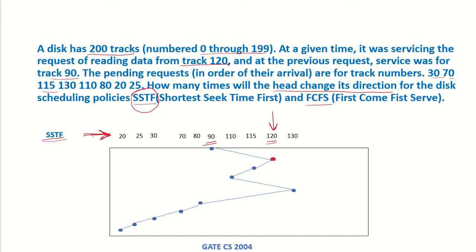If we look at 120, the closest tracks are 115 and 130, but 115 and 120 have a difference of 5 tracks and here it is a difference of 10 tracks. So it is first going to move to 115. From 115, the closest requests are from 110 and 130, but 110 is closer, so it is going to move to 110.